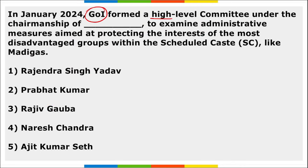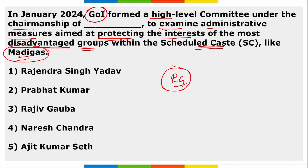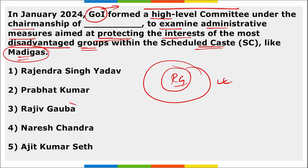The Government of India formed a high-level committee under the chairmanship of Rajiv Goba to examine administrative measures aimed at protecting the interests of the most disadvantaged groups within scheduled castes, such as Madigas.